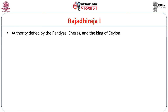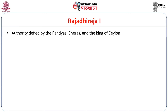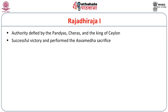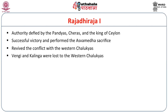Now we can shift our discussion to the other rulers after Rajendra I. During the reign of Rajaraja II, the authority of the Cholas was challenged by the Pandyas, Cheras, and the kings of Ceylon. He suppressed all the revolts and once again firmly established Chola power in their territories. To commemorate these victories, he performed an Ashwamedha sacrifice. During his time, he revived conflict with the Western Chalukyas, but lost Vengi and Kalinga to them. He lost his life in the Battle of Koppuram in the Vengi country.